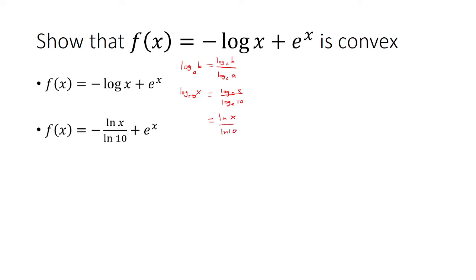So we're going to rewrite that. Now we can take the derivative. The derivative of natural log of x is 1 over x. So this will be negative 1 over x times ln of 10. The derivative of e to the x is e to the x.